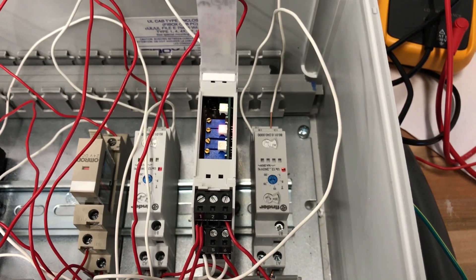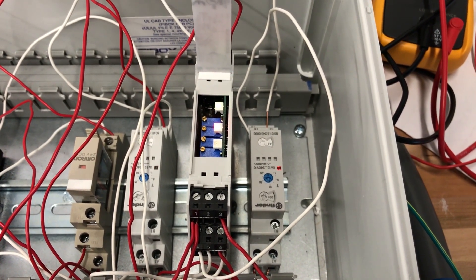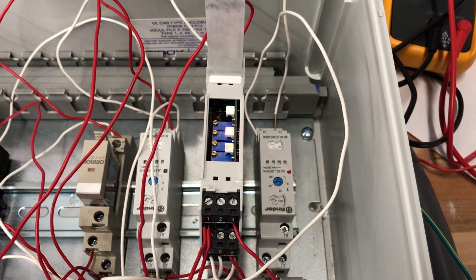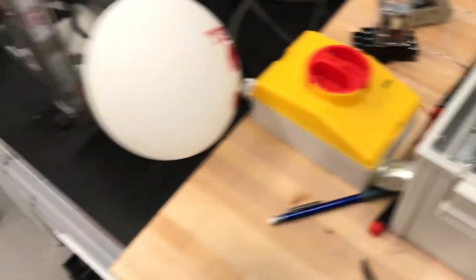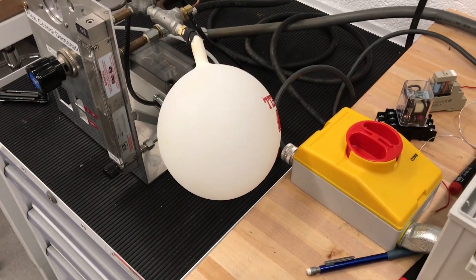Here we see that power now reaches the second alarm relay. Now the alarm relay has tripped from hitting the upper pressure limit, and the balloon starts to deflate.